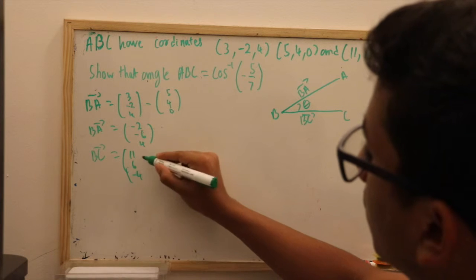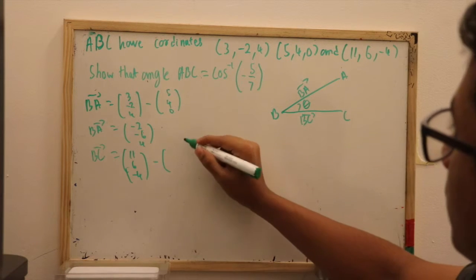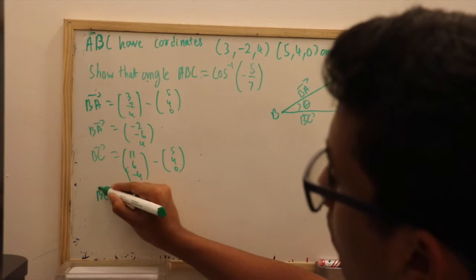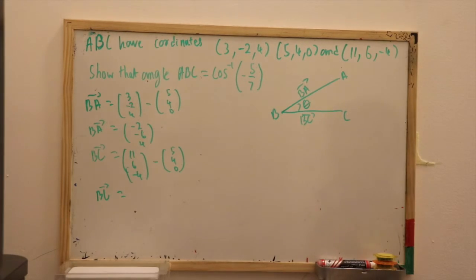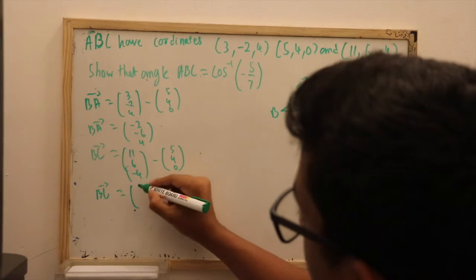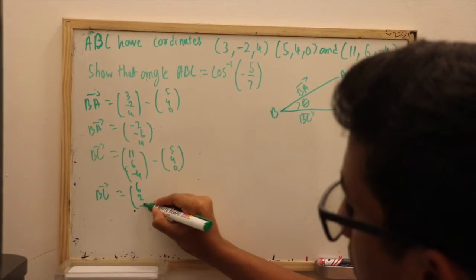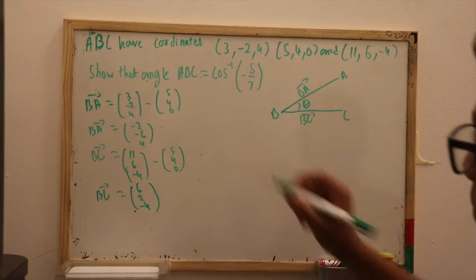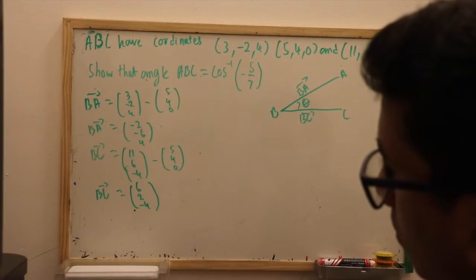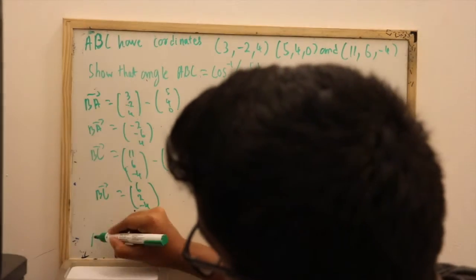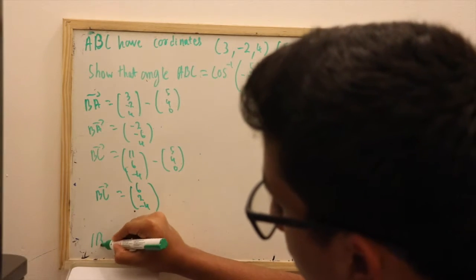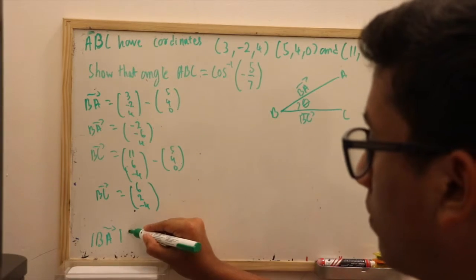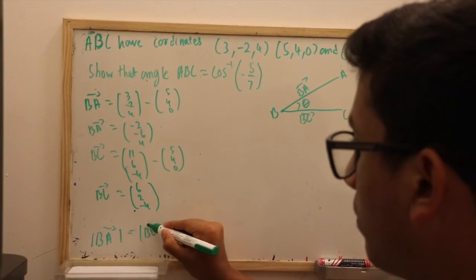Looking at these two vectors, we can see that their coordinates are very similar — they are the same values but in different positions in terms of X, Y, and Z. If we find the absolute value, we get the same result. So we can say that the absolute value of BA equals the absolute value of BC.